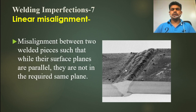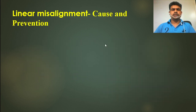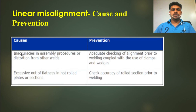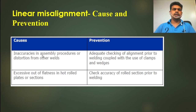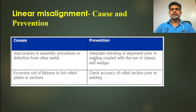Why does it happen and how can we prevent this type of imperfection? Cause and prevention: the cause is inaccuracy in assembly procedure or distortion from other welds. During fitting, if we do not follow the proper assembly procedure, or if distortion occurs during welding, this type of misalignment can happen. Prevention: adequate checking of alignment prior to welding, with the use of clamps and wedges. Before welding we should check that the alignment is proper, and only then start welding.